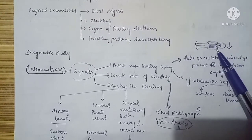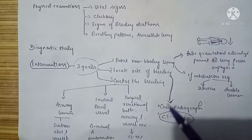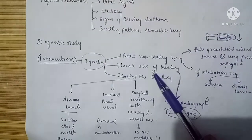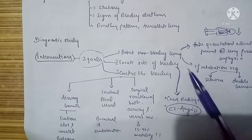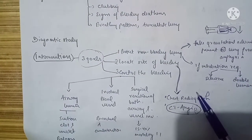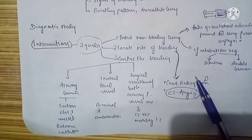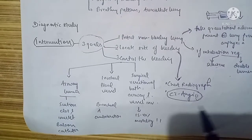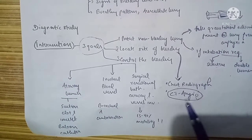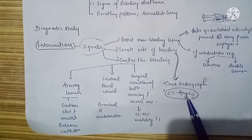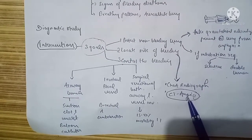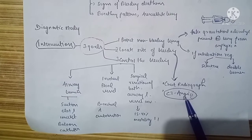To locate the site of bleeding, we can perform a chest radiograph, which may show some findings, but the definitive diagnostic and therapeutic investigation is CT angiography.